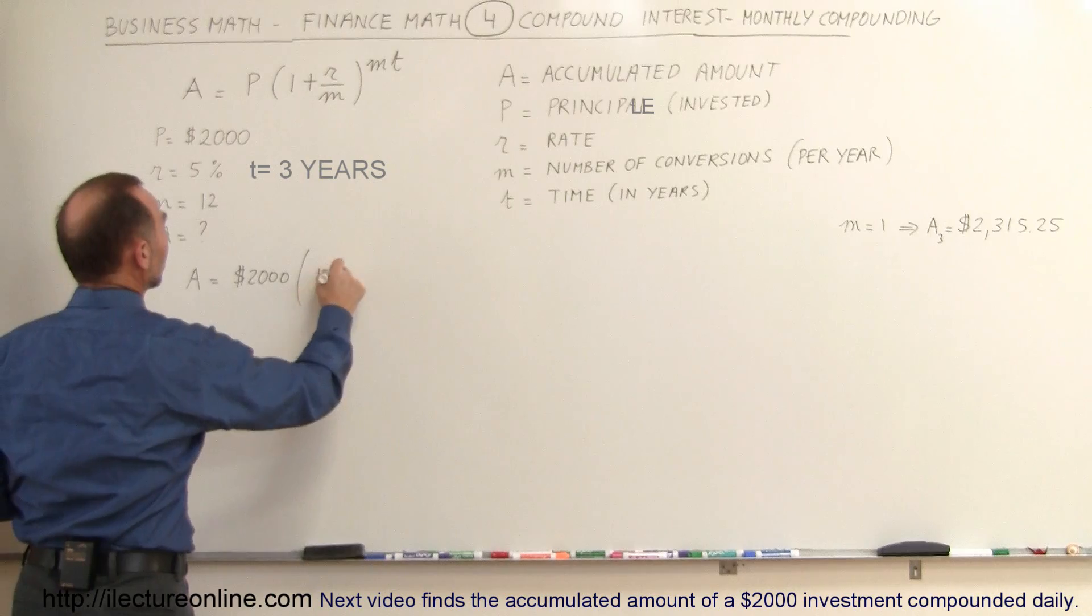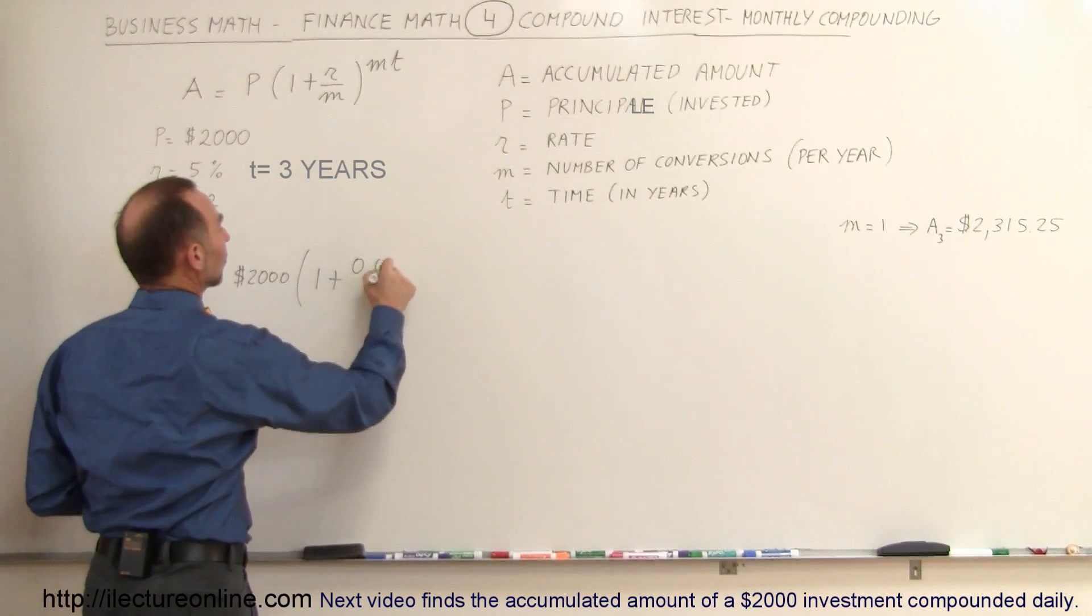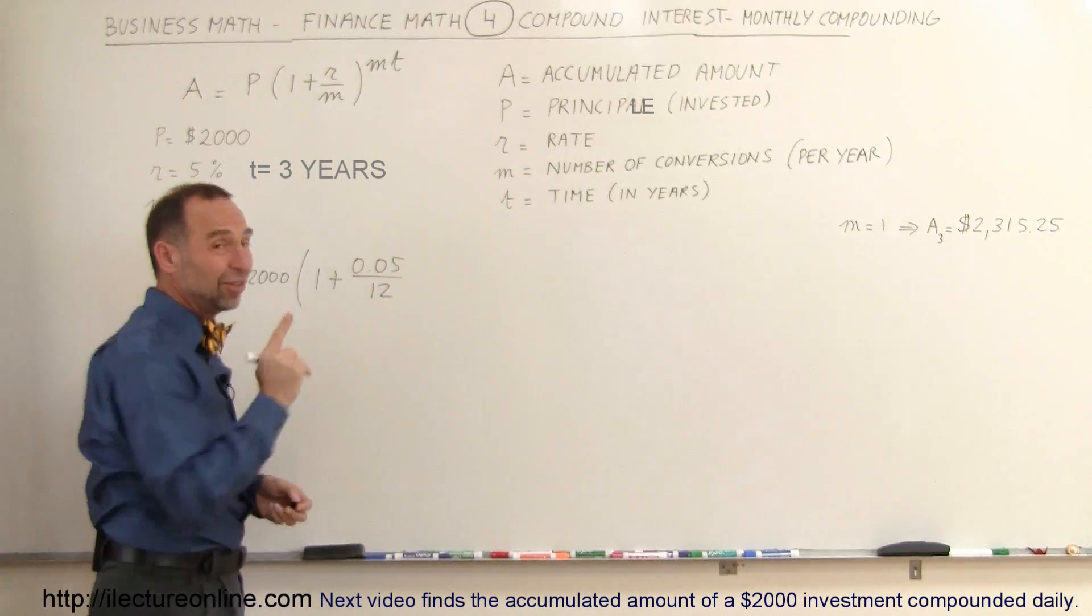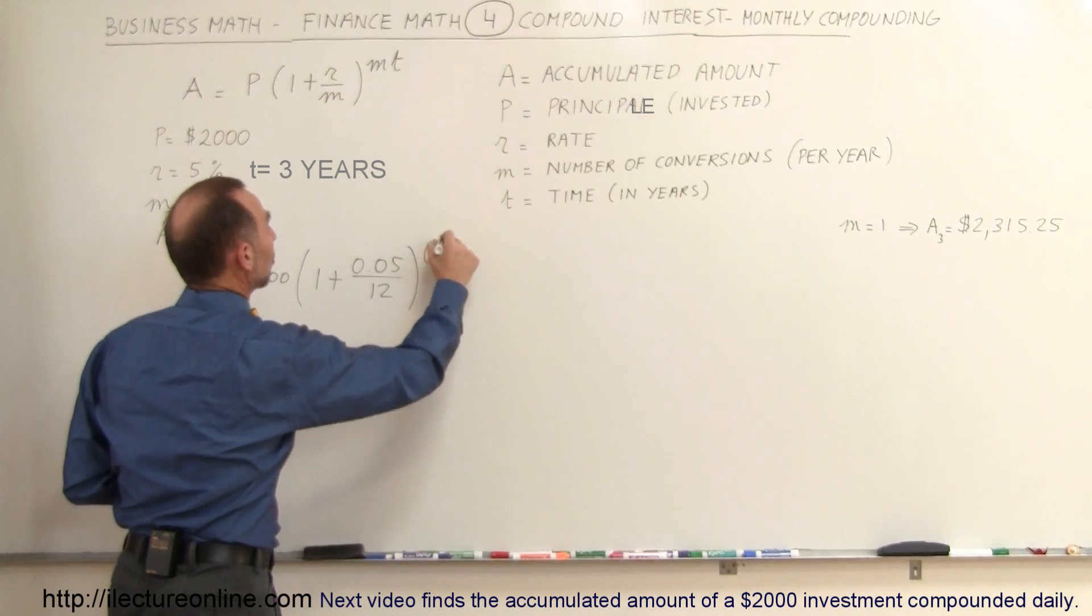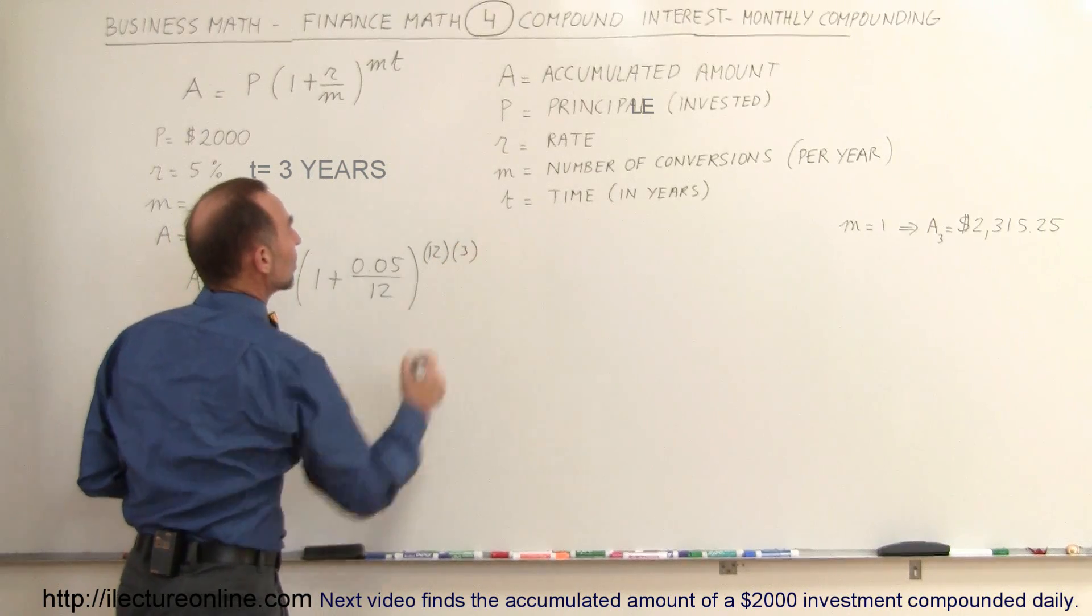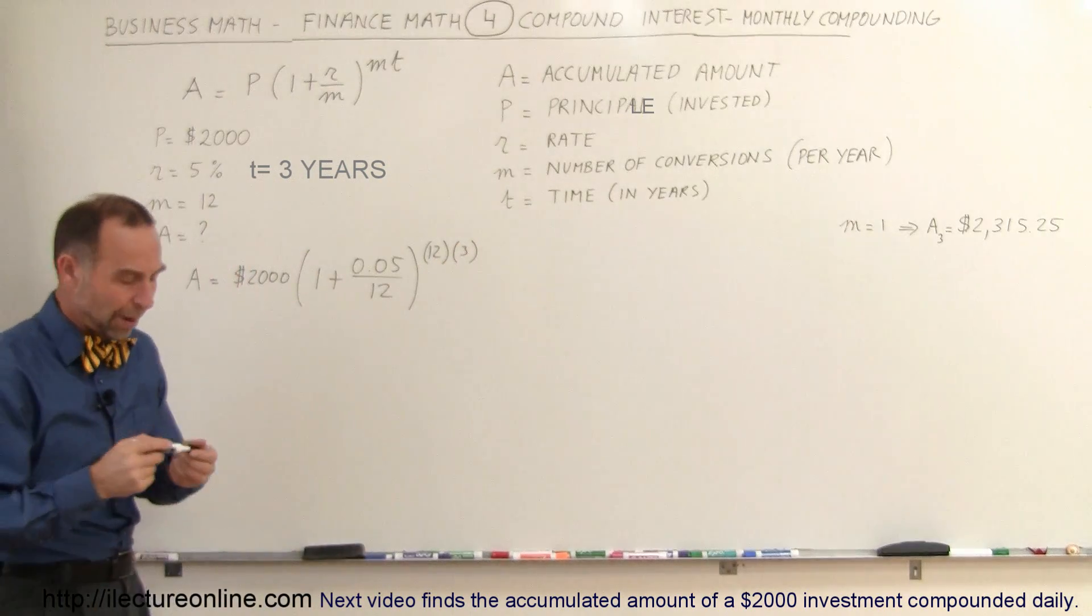Times 1 plus the rate, 0.05, divided by the number of conversions. So in this case, monthly would be 12, and then you raise that to 12 times T, which would be three years, so we raise that to the 36th power.